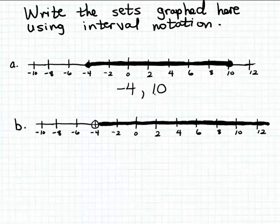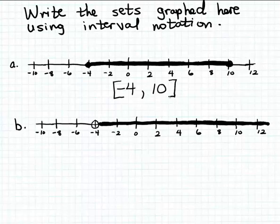With interval notation, all you're simply going to do is write down the two boundary values, and then indicate whether the boundary values themselves are part of the set. We see in our graph that we have a closed dot graphed at minus 4 and also a closed dot graphed at positive 10. So that means the boundary values are going to be included in the set. To indicate that in interval notation, you'll use a square bracket beside the minus 4 and also a square bracket beside the 10.